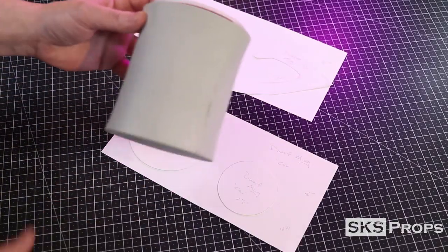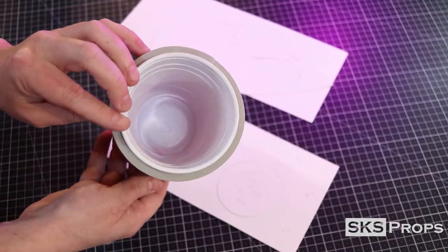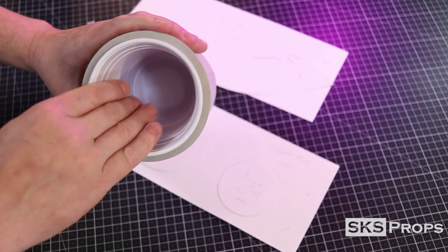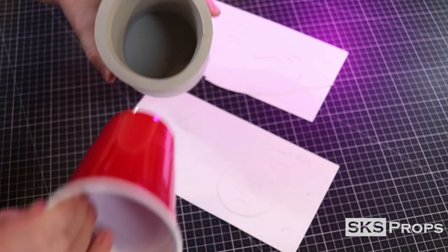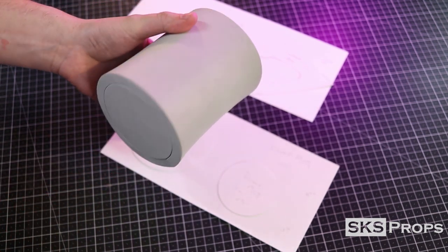Of course, the first thing to do is go to sksprops.com and download the template so you can build right along with the video. For this demonstration, I'm going to be making the holder for the cup, so I need to fabricate the side and bottom.